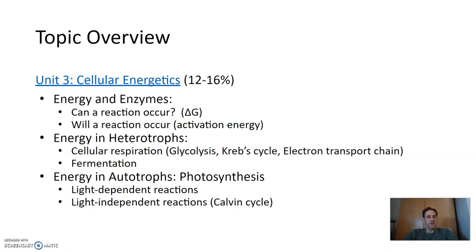Unit three was all about cellular energetics. So we began by looking at energy and enzymes, asking these two critical questions: Can a reaction occur and will a reaction occur? For the question of can it occur, delta G is the key value, and we need a negative delta G for a reaction to occur. And if it doesn't have a negative delta G, then it needs to be coupled with another reaction that does have a negative delta G. Will a reaction occur? The key term there is activation energy, and you hopefully remember that enzymes help lower the activation energy so that a reaction that can occur will occur.